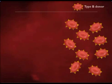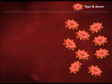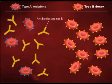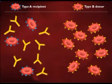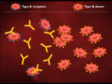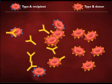If blood from a person who is type B is transfused into a person who is type A, antibodies present in the type A blood react with the surface antigens on the incoming red blood cells.